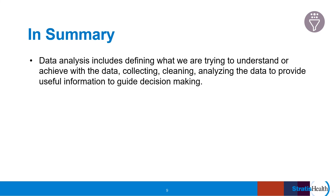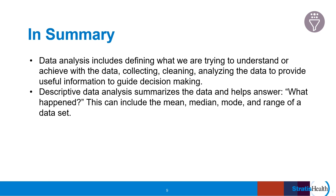In summary, key steps in the data analysis process include defining what we are trying to understand or achieve with the data, collecting, cleaning, and analyzing the data to provide useful information to guide decision making. Descriptive data analysis summarizes the data to highlight anomalies, trends, and underlying issues — it helps to answer the question, what happened? Calculating the mean, median, mode, and range of a data set can be helpful: the mean is the average of all numbers, median is the middle value in the sequence, mode is the number that occurs most frequently, and the range is the difference between the highest and lowest value.